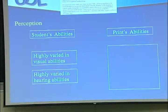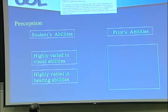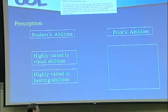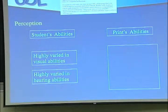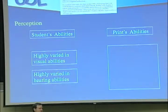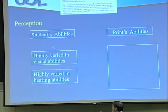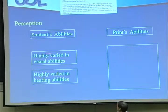What I really want to do today is talk about, if you're reading from print — what are print's abilities and disabilities? When you look at a classroom of students, you're going to find students that are highly varied in their visual abilities and in their hearing abilities — just naturally. This is the first part: perception. So what are print's disabilities when it faces the fact that students are really variable?